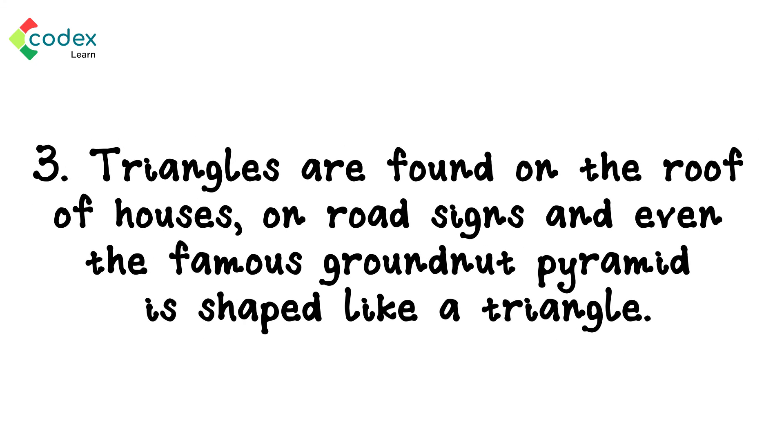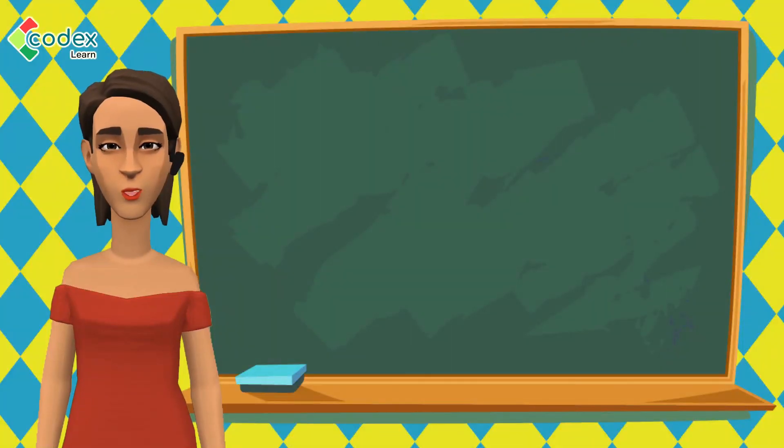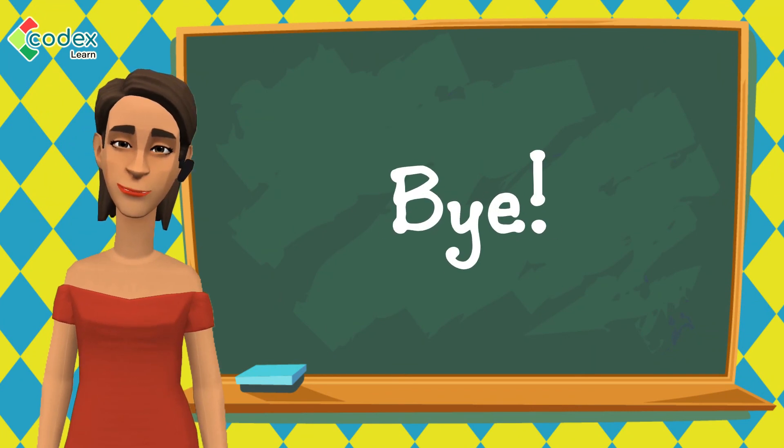Number three, triangles are found on the roof of houses, on road sides, and even the famous groundnut pyramid is shaped like a triangle. I hope you had as much fun today as I did. Till next time, bye!